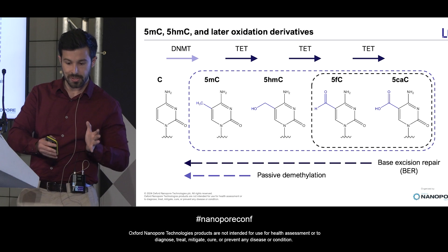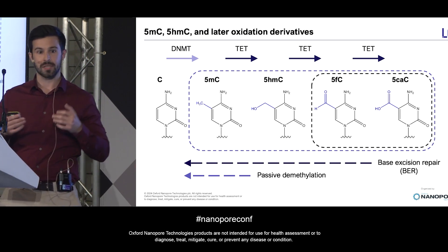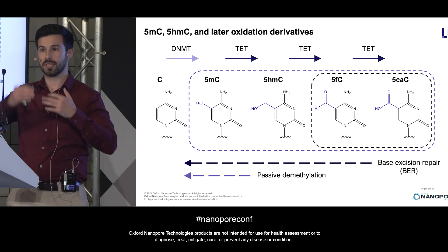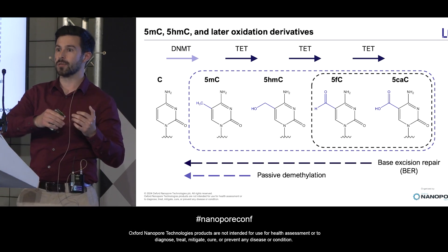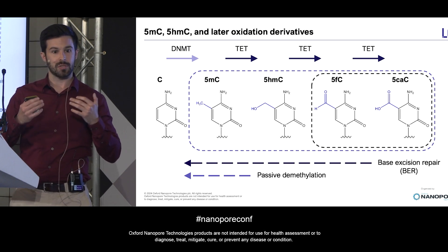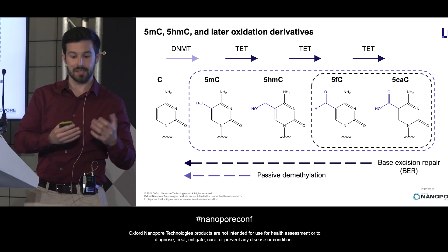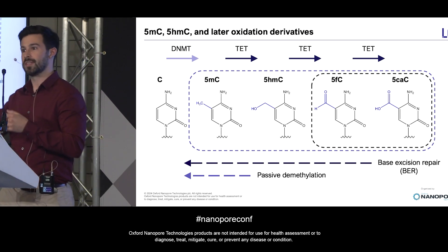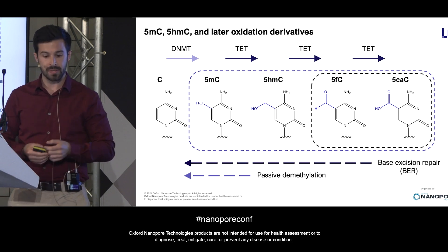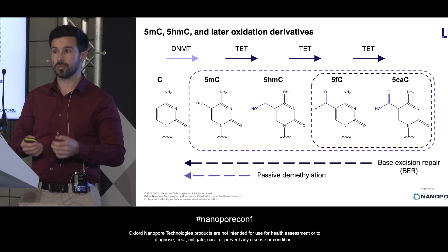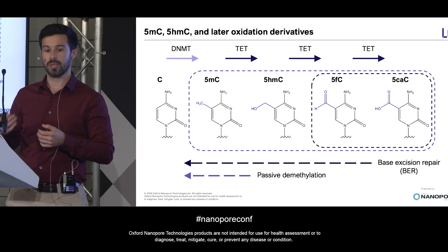The next two states, 5-formylcytosine and carboxylcytosine, are less well-known. They're largely considered transient intermediate products as part of the demethylation pipeline, where modified cytosine goes back to being unmodified. This enables the genome to have a great degree of flexibility — you can have cytosine, methylcytosine, hydroxymethylcytosine, and back again. This pathway is incredibly important for human development, health, aging, and tissue differentiation, but its dysregulation is known to be involved in many human diseases.